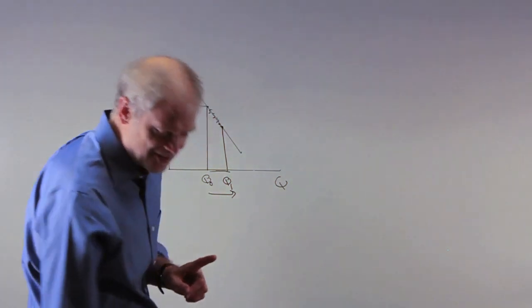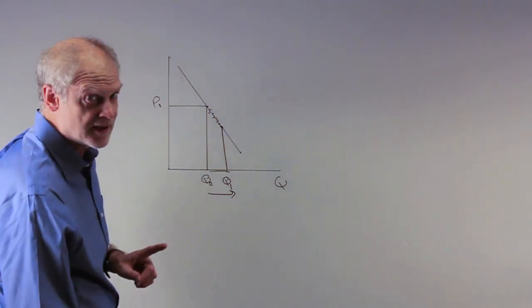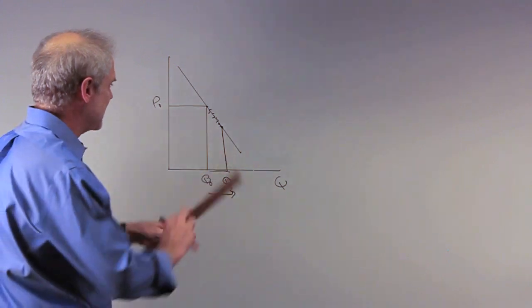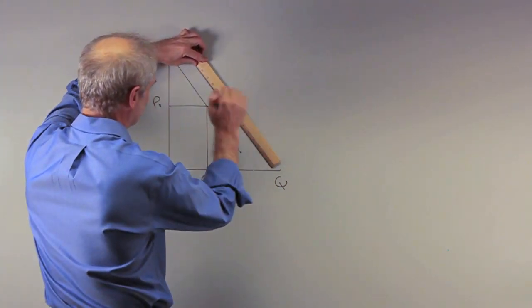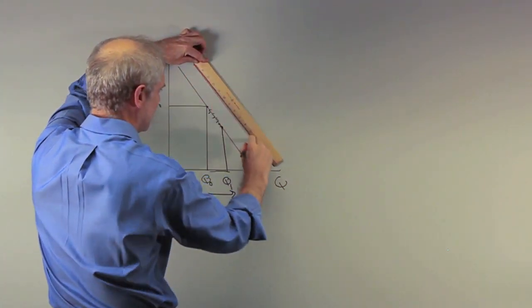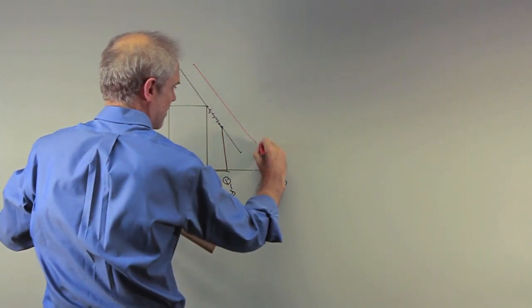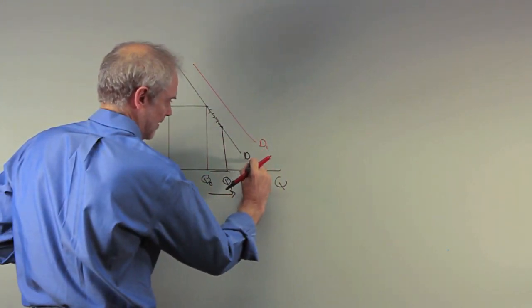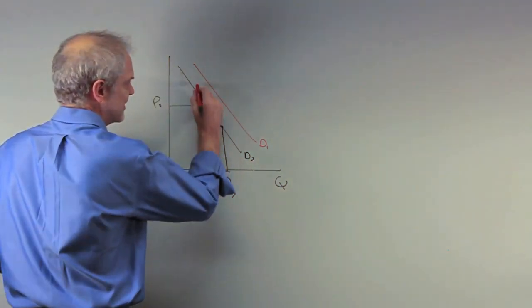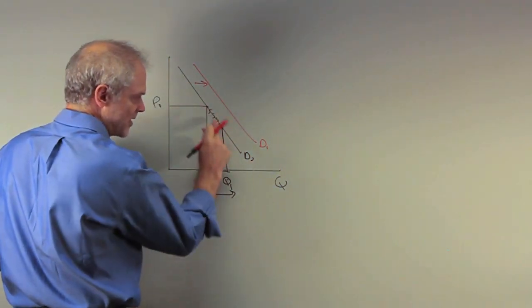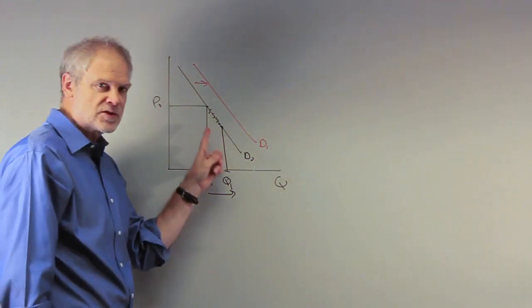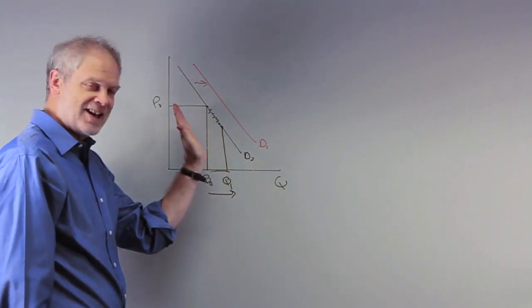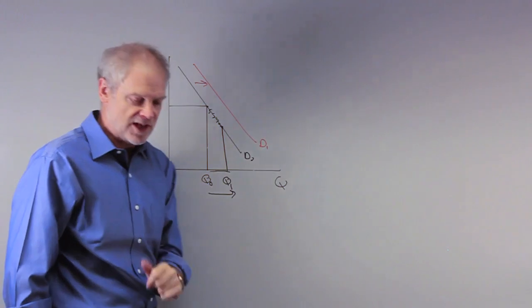I want to contrast that with an increase in demand. What about an increase in demand? It would have caused the demand curve to shift out. This is an increase in demand. We'll call this D1, and to keep things nice, we'll call this D0. This is an increase in demand. This is an increase in quantity demanded. The quantity demanded moves along the demand curve. An increase in demand causes the whole curve to shift out.